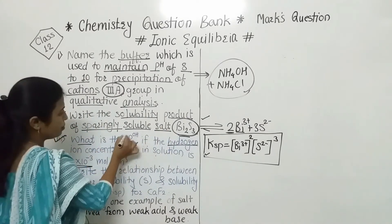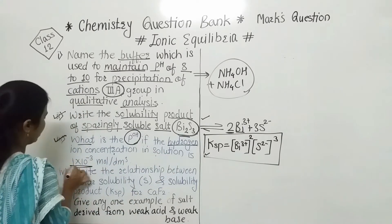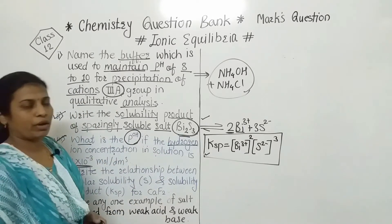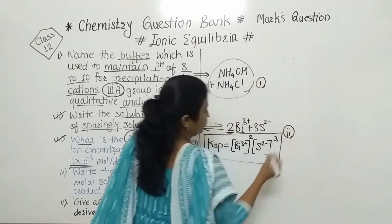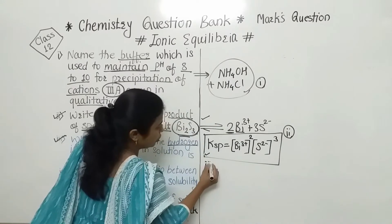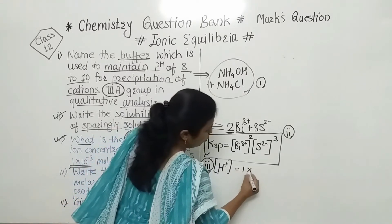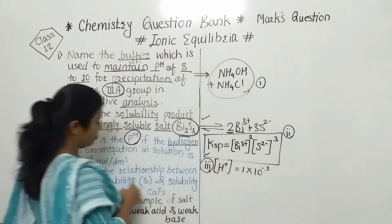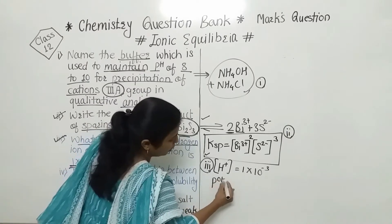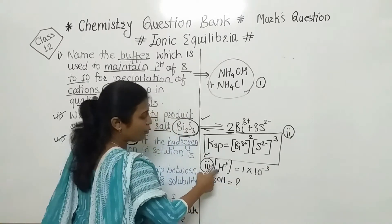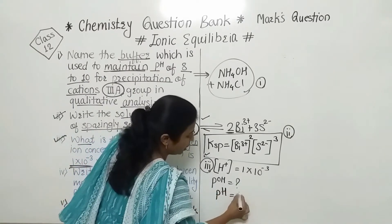Next question: what is the POH if the hydrogen ion concentration in solution is 1×10⁻³? We will discuss the third question answer. They have given hydrogen ion concentration as 1×10⁻³ mol per dm³. We have to find out the POH.